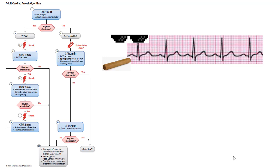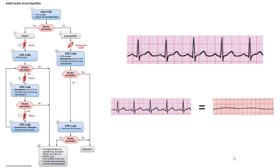So how does ACLS handle the uniqueness of PEA? They decide to just throw PEA into the same category as asystole. PEA's algorithm is identical to asystole, and the expected treatment is identical. In the world of ACLS, PEA is equal to asystole. This is equivalent to treating your two children exactly the same and not recognizing their individual uniqueness. In my opinion, the two rhythms are not equal and should be treated as separate entities with separate approaches in management.